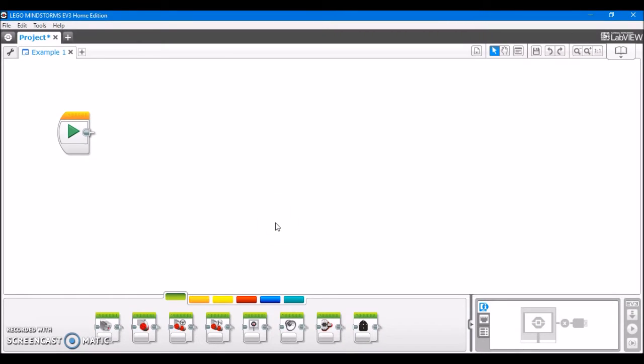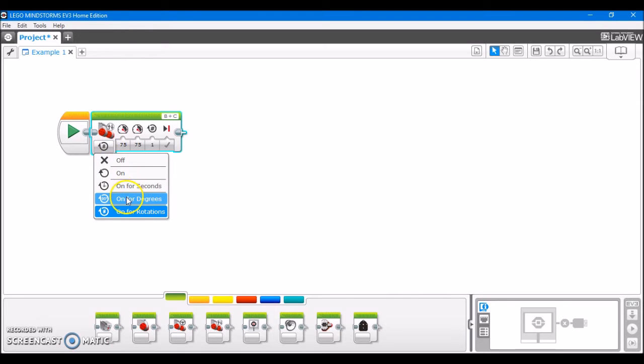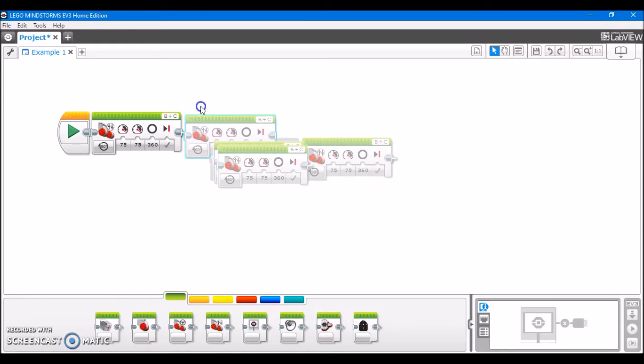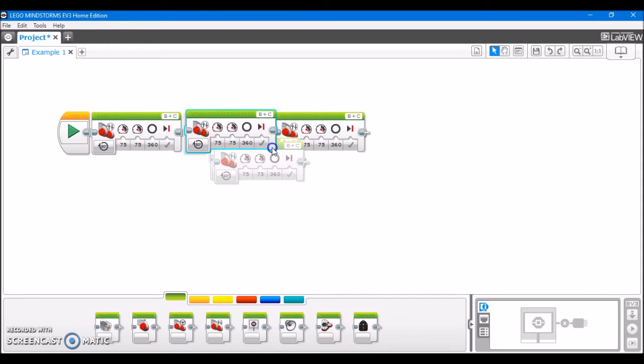So again, we have opened the EV3 programming environment, and we're going to make a program based on the measurements that we just took. And there are five actions, so we're going to want five of these tank blocks. And I'm going to change it to degrees first, because we took our measurements in degrees. You could also do this in rotations, but my recommendation is to use degrees. It's a little bit more precise. So we're going to need five of these. That's five. And of course, put them end to end in sequential order. Just drop them in like that.